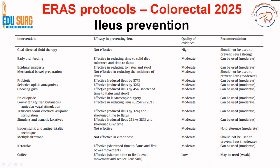For ileus prevention, early oral feeding and epidural analgesia are beneficial. Bowel preparation does not help with ileus prevention. Probiotics or selective opioid antagonists may be effective but are not a formal recommendation. Chewing gum is routinely used in colorectal units and is definitely helpful in reducing ileus and shortening time to first flatus and stool. Osmotic and stimulant laxatives may also be effective, with moderate evidence. A lot of patients suggest that coffee helps with the first bowel movement, but the quality of evidence is low.